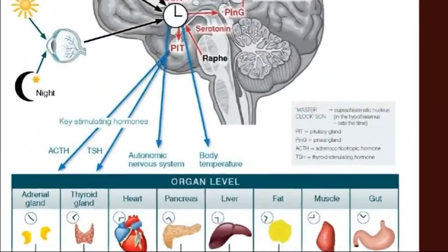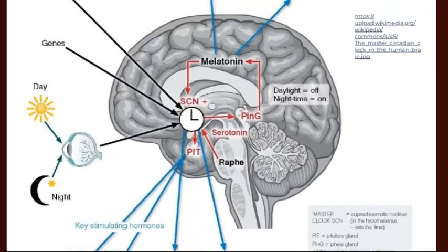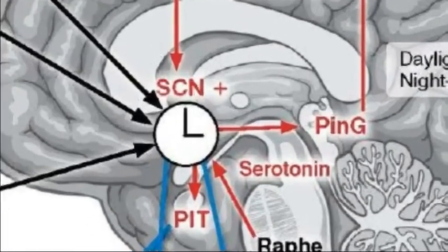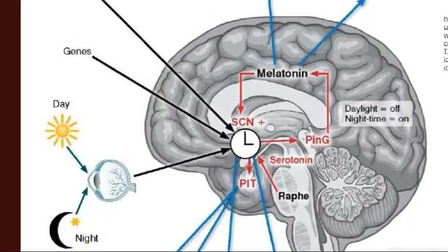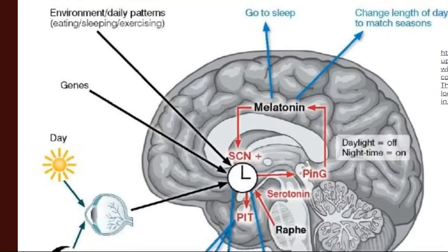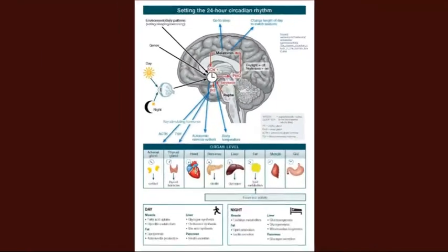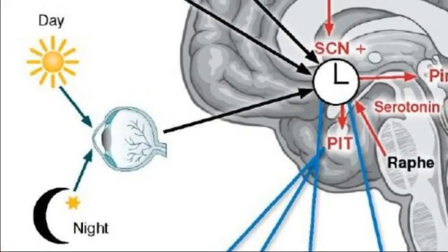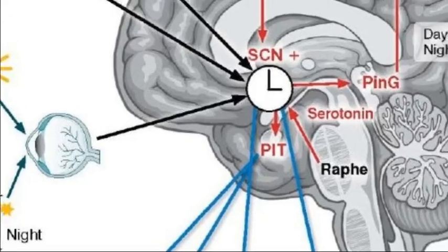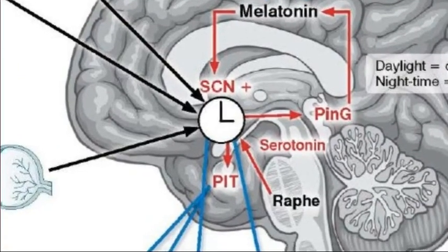The message about what time of day it is comes to those systems and organs largely through the central clock in our brains, known as the suprachiasmatic nucleus — the SCN. Input comes into the SCN based on the environment: when we are eating, sleeping, and exercising all have a massive impact on how our bodies function. Our genetics can also have an impact, and light coming in through our eyes sends messages to the SCN, which then sends messages to various other parts of the body.